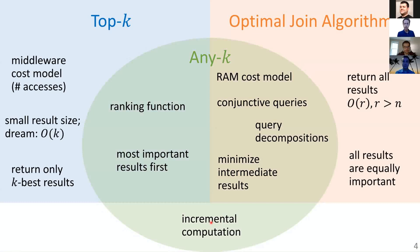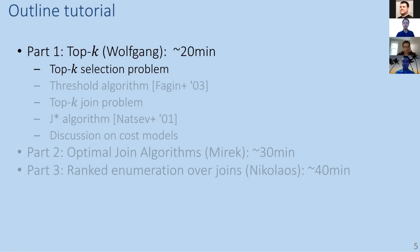This is where ranked enumeration, or any K, fits. The new challenge is to incrementally return the best result first, second, third, until the very end. These three parts form the three parts of our tutorial. In the first part, we want to highlight some of the challenges and underlying assumptions used in Top K — it is a very rich and deep field.